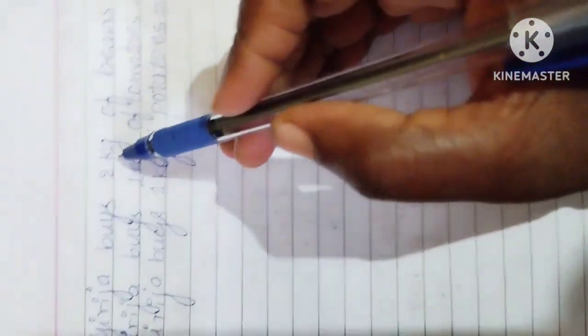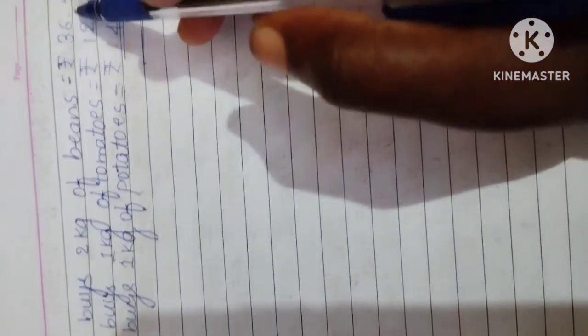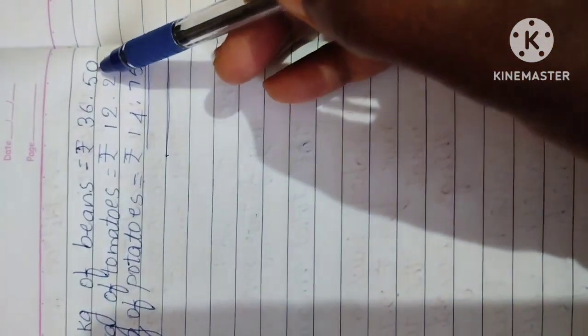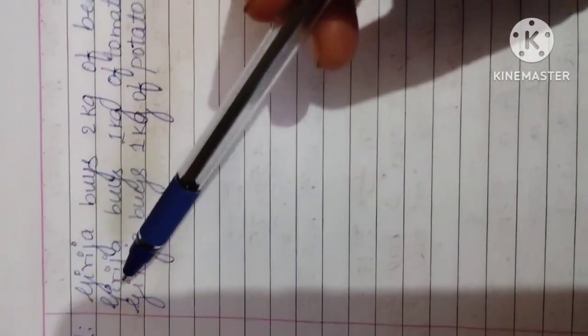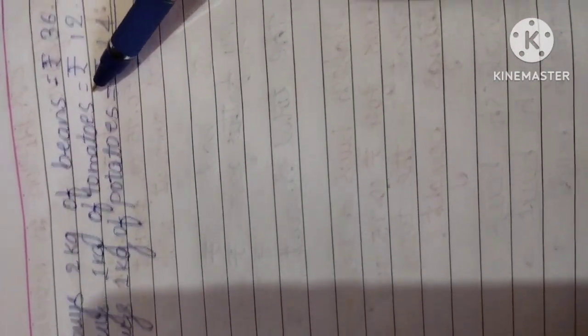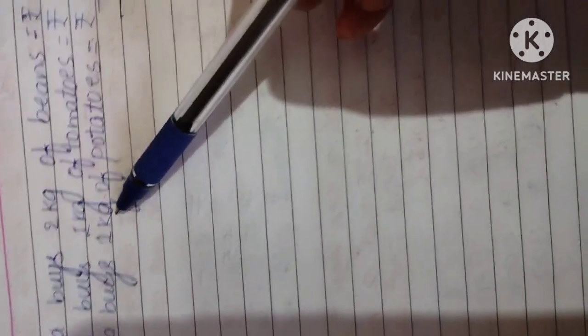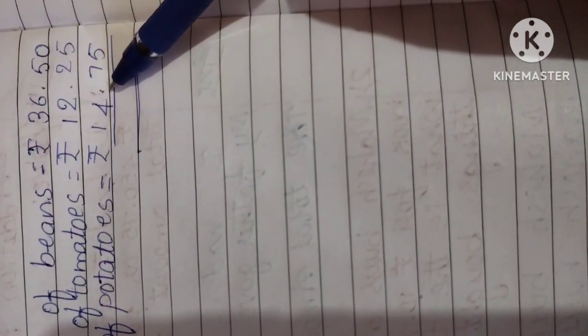We can see now here. Geraja buys 2 kg of beans is equal to Rs. 36.50. Then also, she buys 1 kg of tomatoes, Rs. 12.25. Then also, she buys 1 kg of potatoes, Rs. 14.75. Add now.